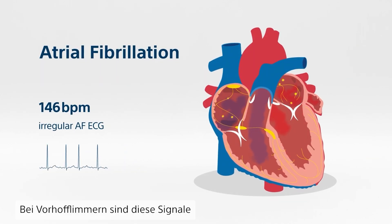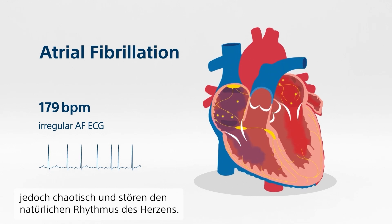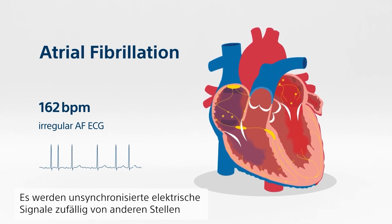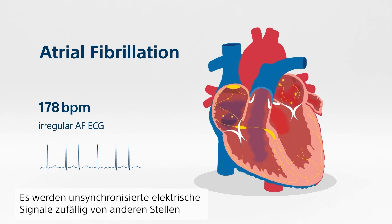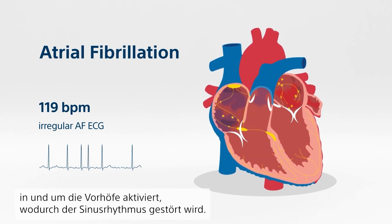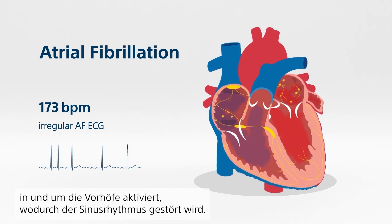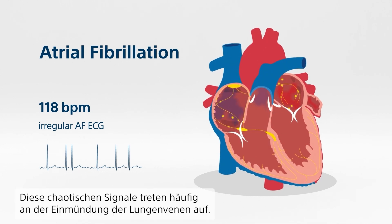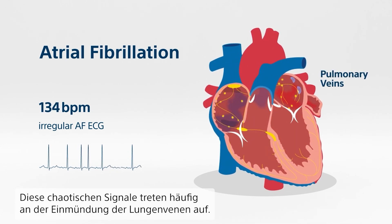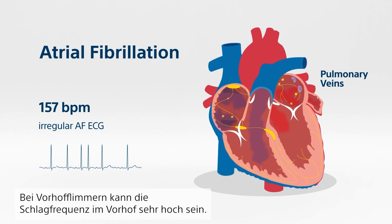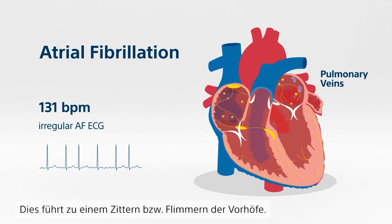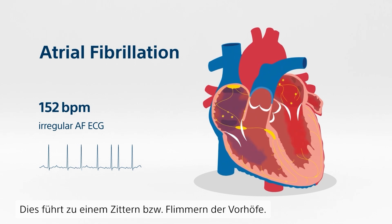But when atrial fibrillation occurs, these signals become chaotic, disrupting the heart's natural rhythm. Unsynchronized electrical signals fire randomly from other locations in and around the atria, disturbing the sinus rhythm. Common locations of these chaotic signals are the roots of the pulmonary veins.